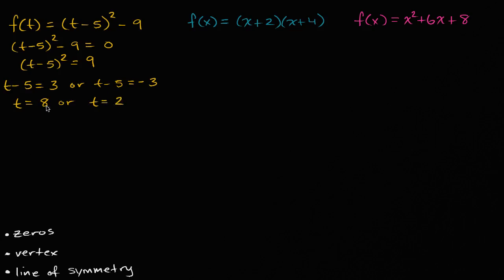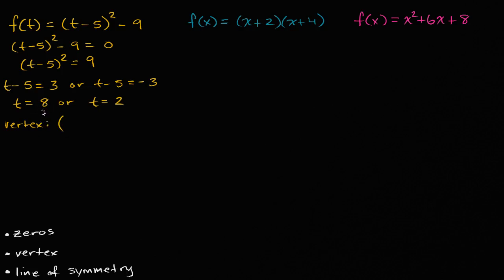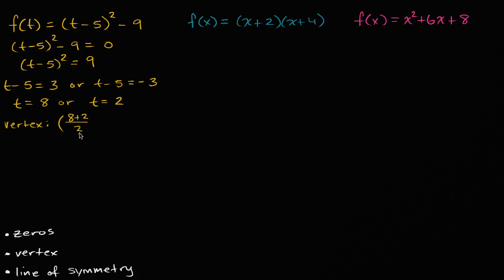Just like that, we have found the zeros for this function. If t equals eight or two, the function is going to be zero — f(8) = 0 and f(2) = 0. Now let's find the coordinates of the vertex. The t-coordinate of the vertex is going to be halfway between the zeros, halfway between where the parabola intersects the t-axis. Halfway between eight and two is their average: (8 + 2) / 2 = 10/2 = 5.